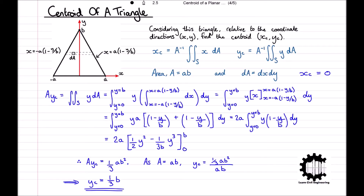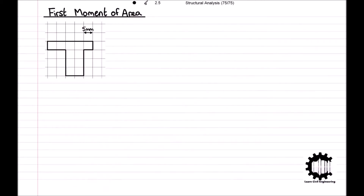We have already learned how to find the centroid of an area using integration in a previous video, so I'll leave the link to that in the description. In this video we'll have a look at other methods for finding the centroid of a section, and we will finish with an example problem implementing the concept of the first moment of area to find the centroid of a complex region.